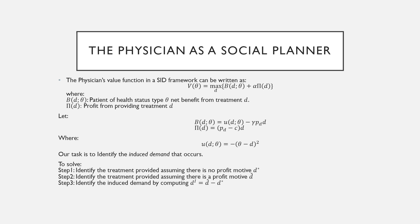So our physician is going to be receiving profits from providing this treatment d but it's going to be entering their utility or their value function as transformed by α. We're going to define our benefits function and our profits where your benefits function could be read as a net health benefits function. This profit function is just revenues minus costs where utility is defined as some type of bliss point.